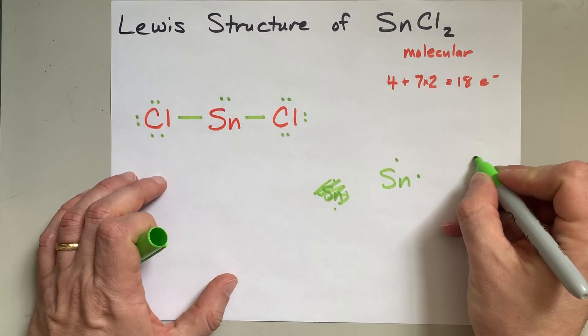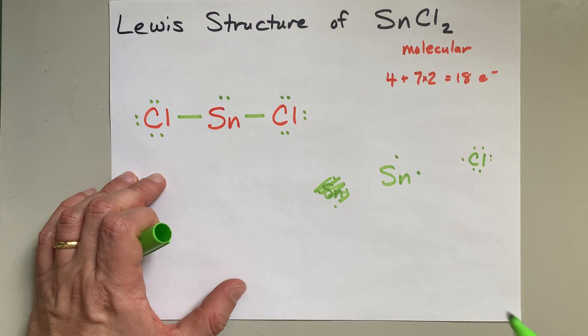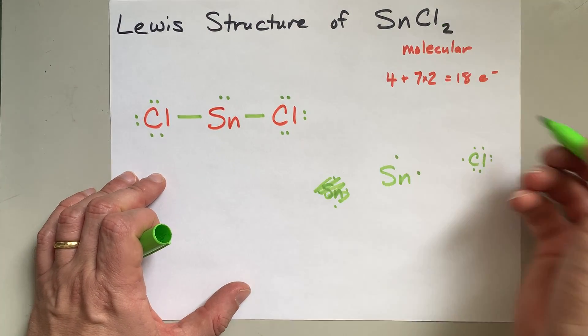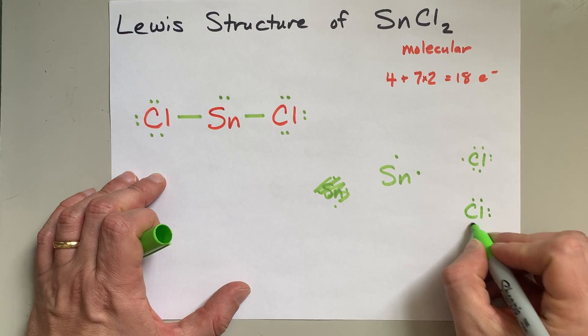Then you draw your chlorines with seven valence electrons around them. See, because they bring seven. One, two, three, four, five, six, seven.